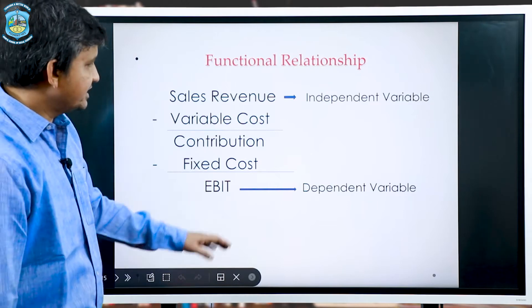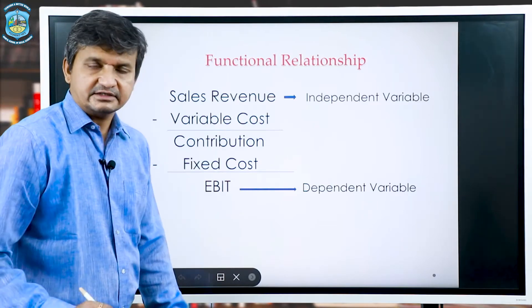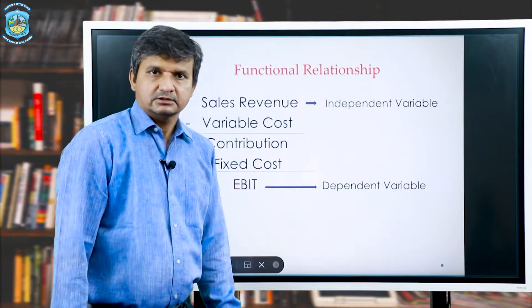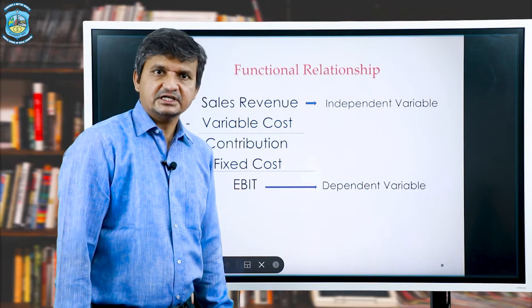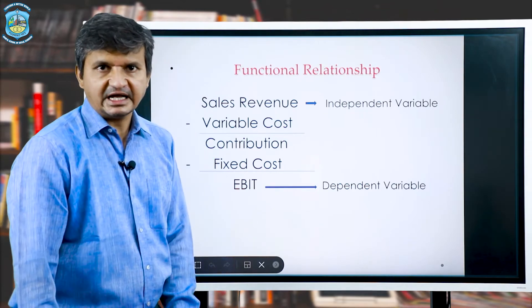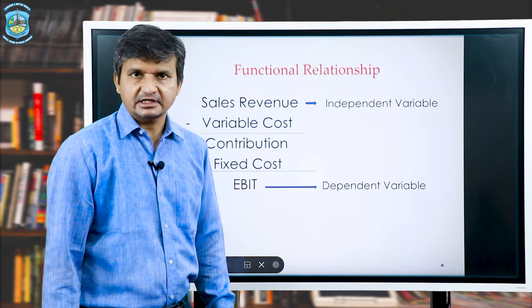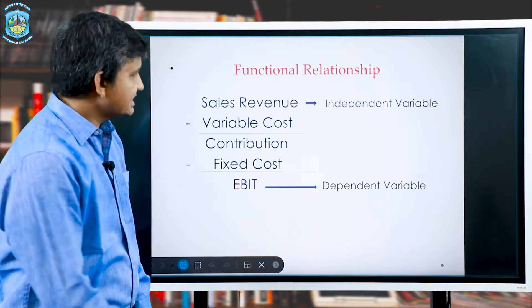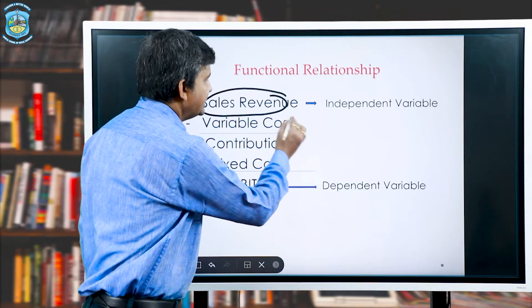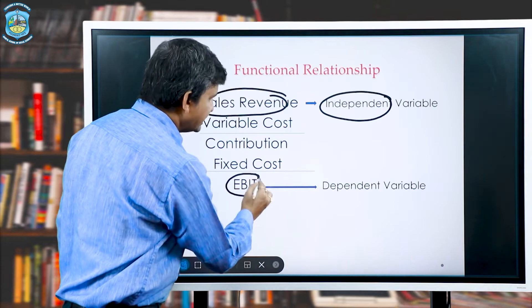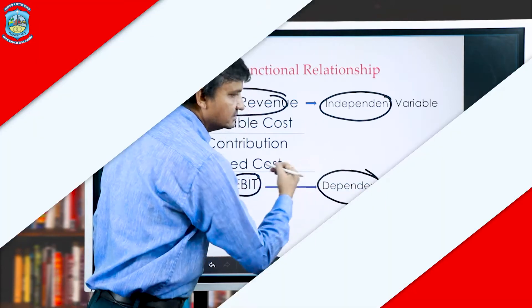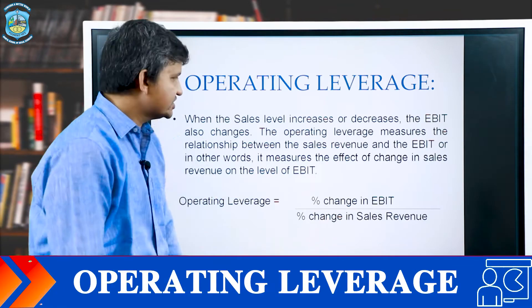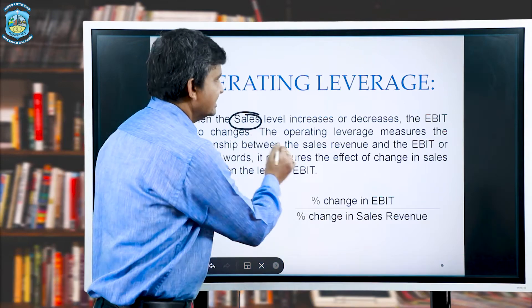Now let's look at the functional relationship of operating leverage. We start with sales, then deduct variable cost to arrive at contribution. From contribution we deduct fixed cost to arrive at EBIT. In operating leverage, sales revenue is the independent variable whereas EBIT is the dependent variable. Operating leverage studies the relationship between sales and EBIT.